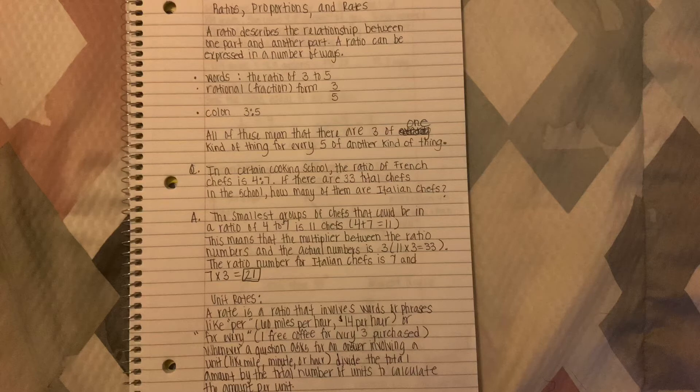Now we are going to start working on ratios, proportions, and rates. A ratio describes the relationship between one part and another part. A ratio can be expressed in words: the ratio of 3 to 5, in fraction form 3 over 5, or with a colon 3:5. All of these mean that there are 3 of one kind of thing for every 5 of another kind of thing.